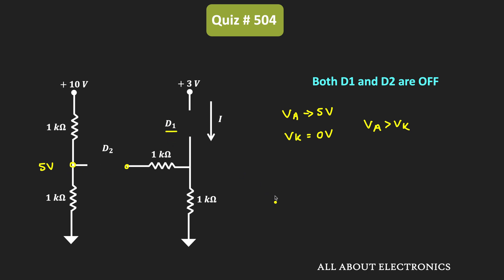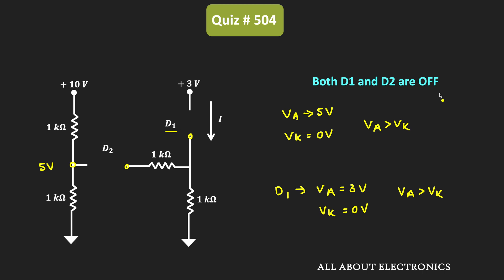Similarly, for diode D1, the voltage at the anode is equal to 3V, while the cathode terminal is connected to ground via a resistor, so the cathode voltage is equal to 0V. Once again, the anode voltage is more than the cathode voltage. So this assumption — both diodes OFF — is not true.